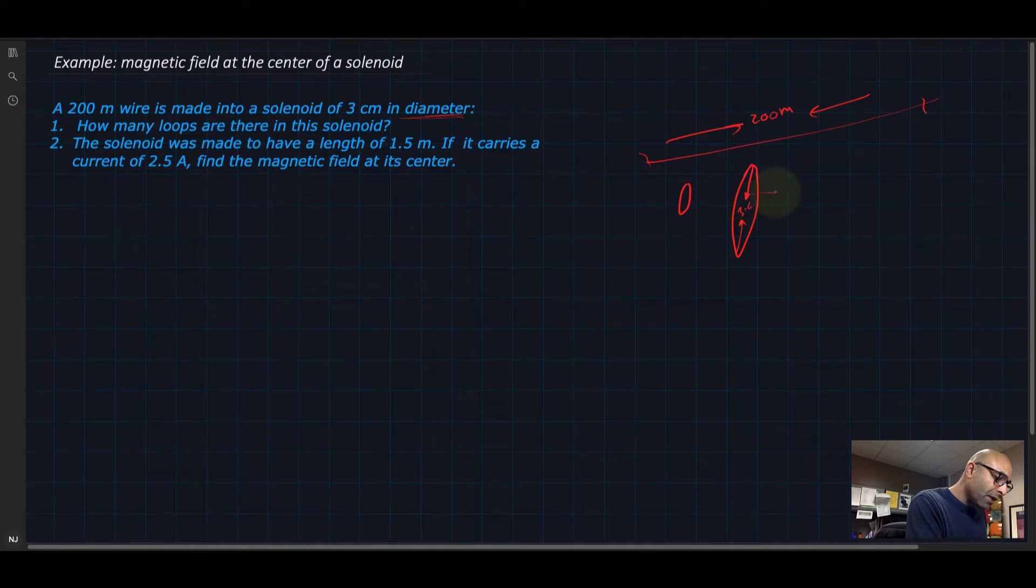How can we find how many loops if we know the length and the radius? Well, each loop will be a circumference of a circle, which is 2πr. So that's the length of each loop.